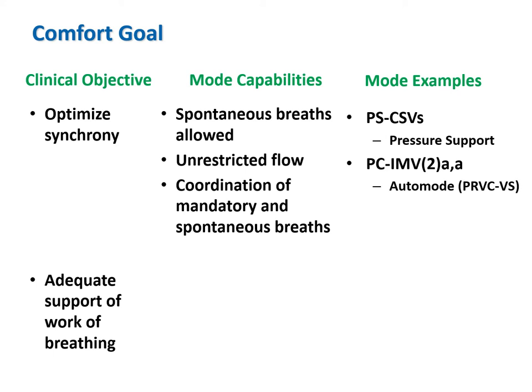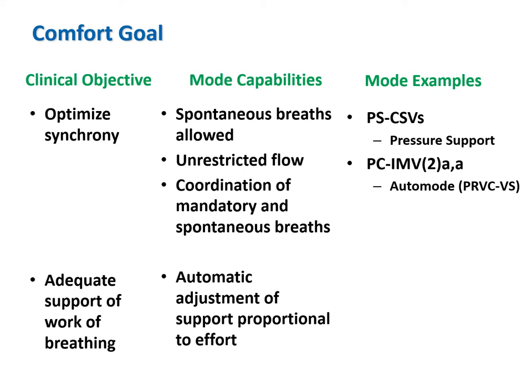If our desire to serve comfort was focused mainly on adequate support for the work of breathing—for example, if the patient had varying inspiratory effort and adaptive targeting led to unstable blood gases and patient discomfort, or if there was a problem with failed trigger efforts as often happens with severe COPD and gas trapping—we might prefer a mode that provides inspiratory support in proportion to the patient's inspiratory effort. The only modes that provide these capabilities are pressure-controlled continuous spontaneous ventilation with servo targeting. Proportional assist ventilation (PAV) or neurally adjusted ventilatory assist (NAVA) are examples. NAVA in particular is a remedy for failed trigger efforts.